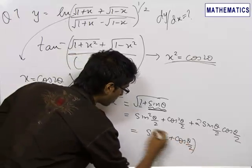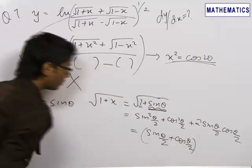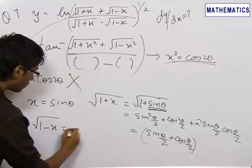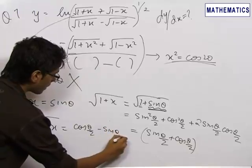Which on taking the under root, this square goes away. Similarly, √(1-x) will be equal to cos(θ/2) minus sin(θ/2).